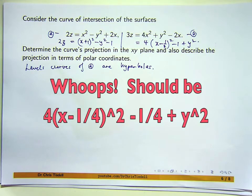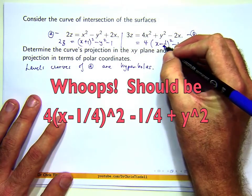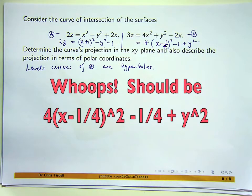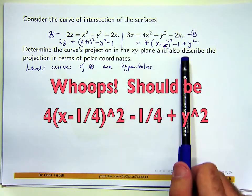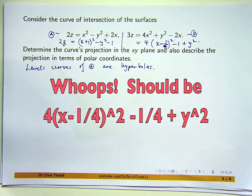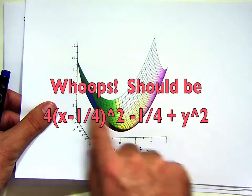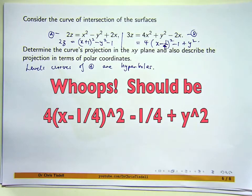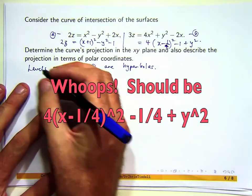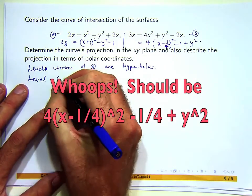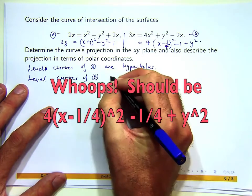What does that tell you? It tells you that 3z equals something squared plus something else squared. That means the surface is going to be like a parabola because it's bounded below. That 3z cannot go below negative one because you've got something squared plus something else squared. It's got to look a bit like a parabola or paraboloid. Level curves of B are parabolas.